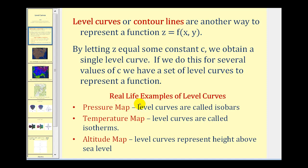There are quite a few real life examples of level curves, and we're going to take a quick look at these before our own example. A pressure map can be represented using level curves, and the level curves are called isobars. A temperature map, which we often see on the news, represents a set of level curves called isotherms. And an altitude map uses level curves to represent the height above sea level.